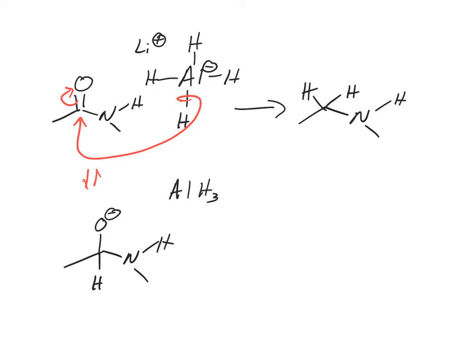Do we have any good leaving groups in the tetrahedral intermediate? No, not really. But what we did create was aluminum with three bonds. So what happens is actually this O- will bond to the aluminum.